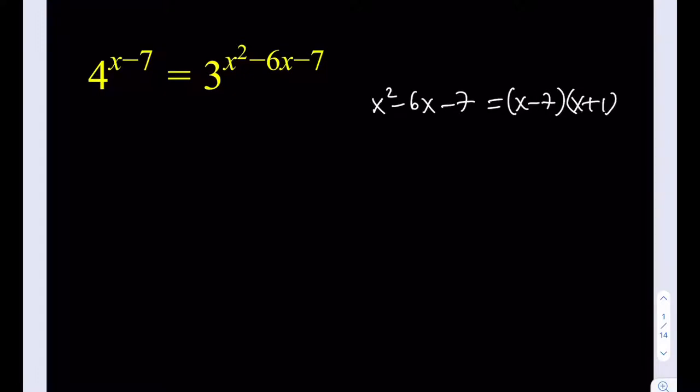So that means that x equals 7 is a solution of this, as well as this one. So that's a common solution, basically. In other words, x equals 7 will make both of them equal to 0.